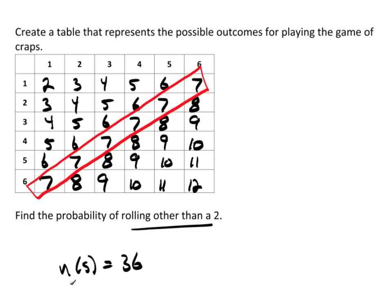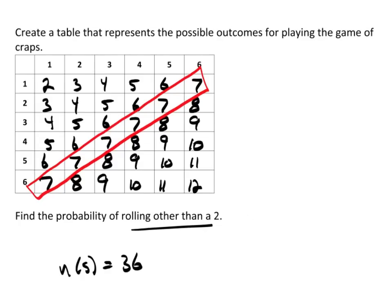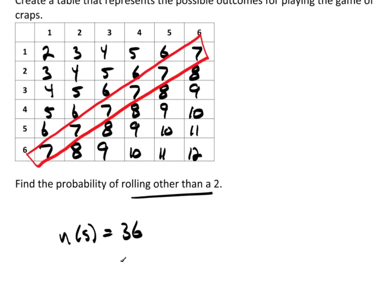Well, if I'm going to try to figure out the probability of getting other than a 2, I need to add up all of these. Well, actually, it's probably easier to find the complement. Because remember, the probability of, I'm going to call this event A.